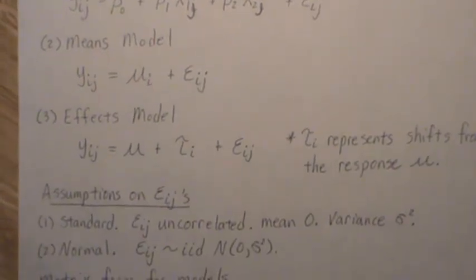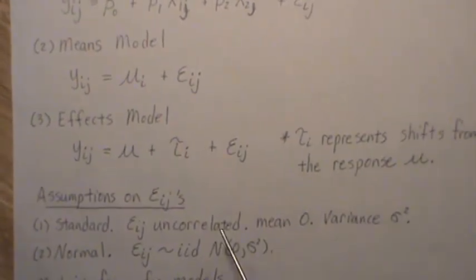The assumptions for these models are on the epsilons, because these are fixed constants or parameters. The standard assumptions is that the epsilons are uncorrelated, mean zero, and variance sigma squared. The normal assumptions are actually the standard assumptions, but we assume that they follow a normal distribution. And we need this when we start doing confidence intervals and hypothesis tests.